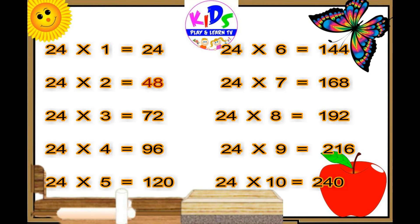24 6s are 144, 24 7s are 168, 24 8s are 192, 24 9s are 216, 24 10s are 240.